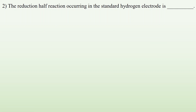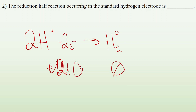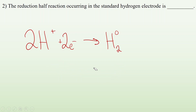The reduction half reaction occurring in a standard hydrogen electrode — we're talking about reduction, so hydrogen being reduced means it starts as a positive value and becomes H with no charge. But it's a diatomic molecule, so it's got to be H₂. Now we balance: I put a 2 in front of the H⁺. Then I balance the charges — I have plus 2 on the left and 0 on the right, so I add 2 electrons to the left side to bring the overall charge down to 0. This is the standard hydrogen electrode reduction.